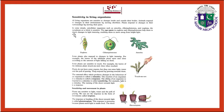In some simple unicellular organisms such as amoeba, chlamydomonas, and euglena, the cytoplasm as a whole is sensitive. These unicellular organisms — amoeba, chlamydomonas, and euglena — are each made of a single cell.